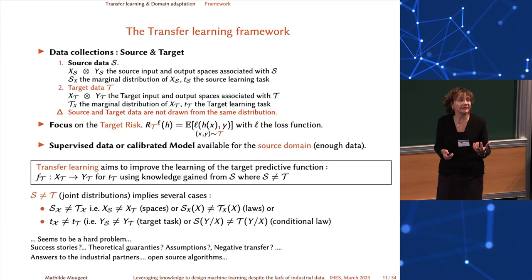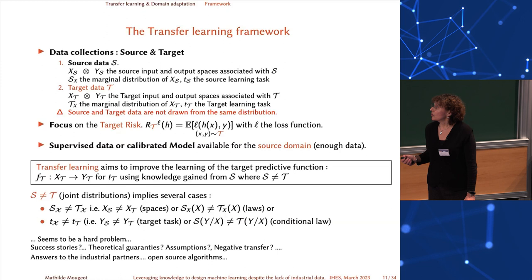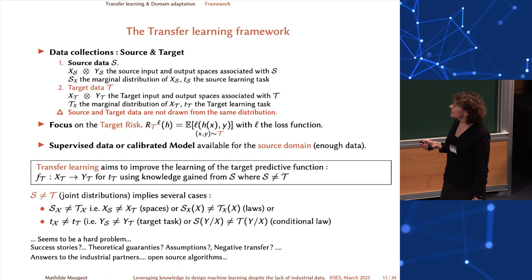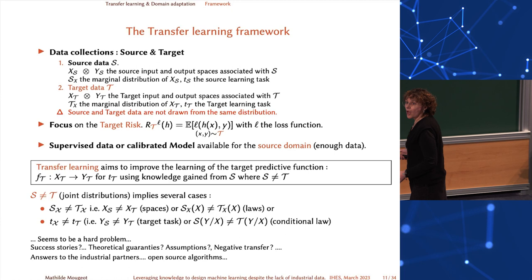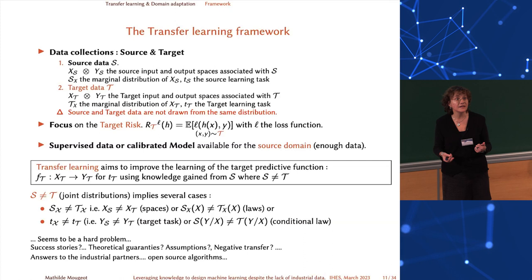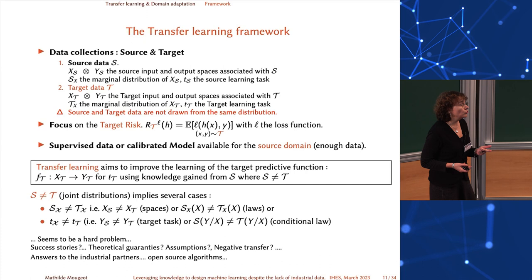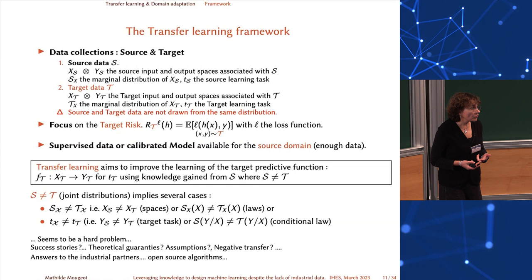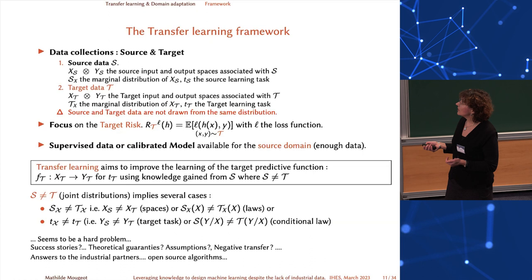The definition of source and target data not being drawn from the same distribution covers several cases: you may not have the same input space, you may not have the same distribution for the input data, or you may consider different conditional distributions between source and target. So it seems to be a hard problem.